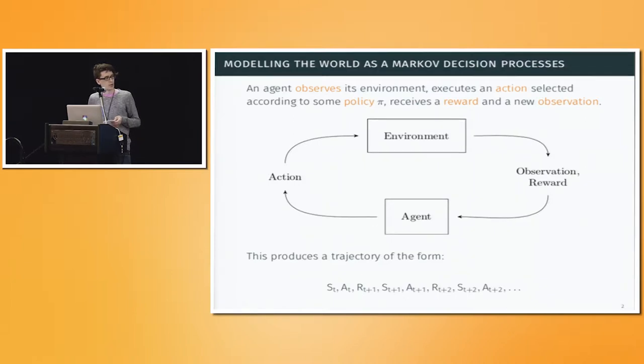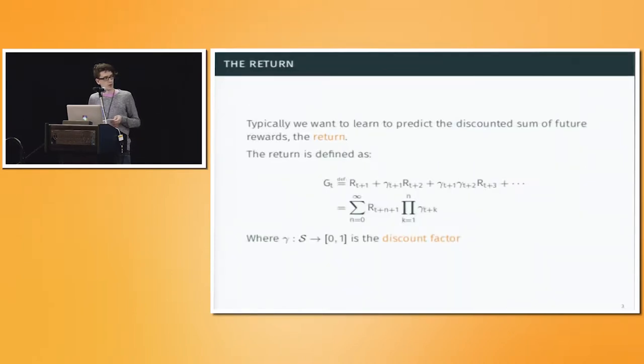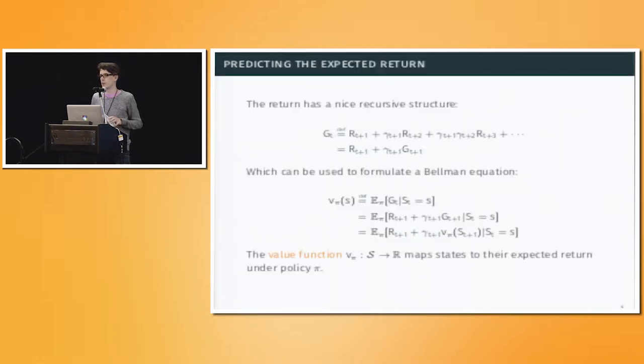Now, the distinguishing thing about reinforcement learning is we don't want to learn about just the rewards, we want to learn about the discounted sum of the rewards given that we're in a particular state. This is called the return and defined as rewards starting now plus the discounted next reward plus the twice discounted reward after that and so on, where we're using a state-dependent discount factor that has been recently explored in the literature.